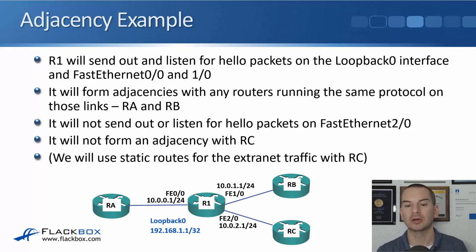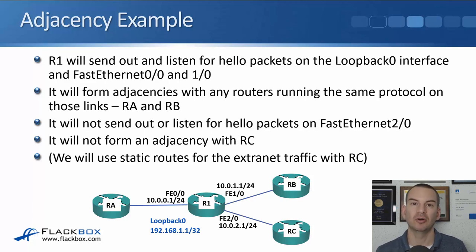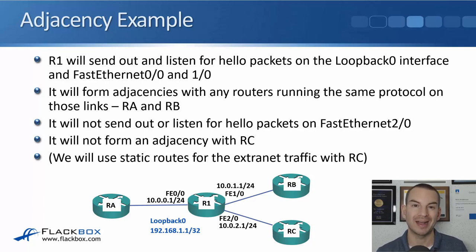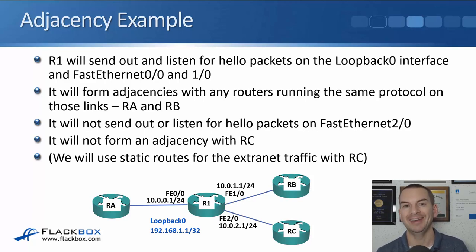In this scenario where RC is a partner, we need connectivity to them but we're not going to give them our internal information. In that case, we could use static routes between us and them just to give very limited connectivity.